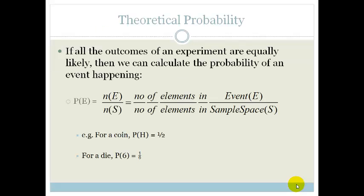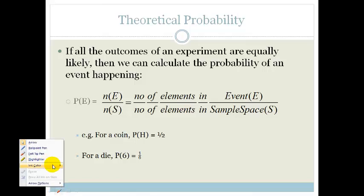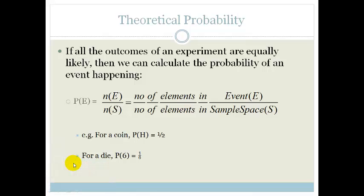So, it says, if all the outcomes of an experiment are equally likely, then we can calculate the probability of an event happening.